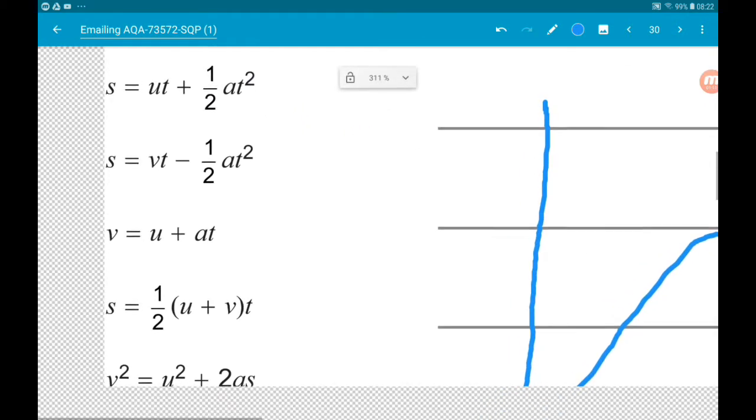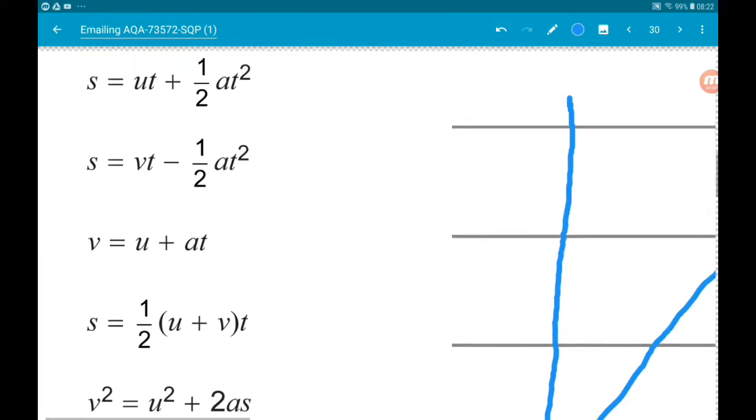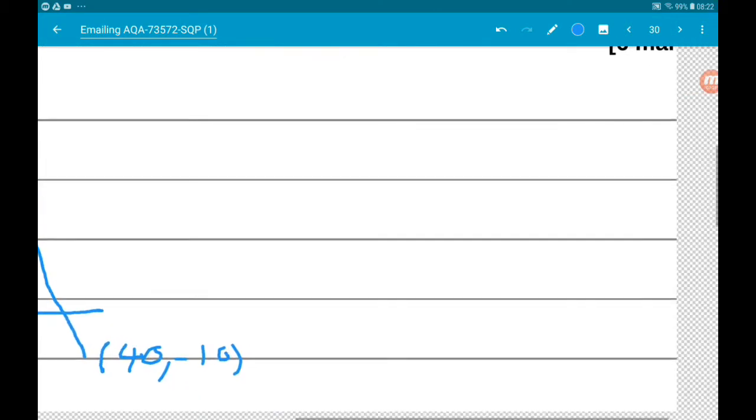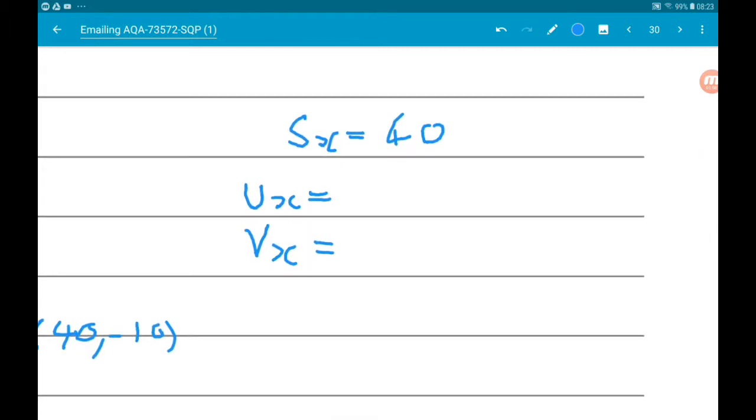Now we're going to need the SUVAT equations, so I've stolen them from the formula booklet. Let's first of all list what we are given in the question and see what we can work out. We know that there are no resistance forces acting on the ball, so we do know that acceleration along x is zero.